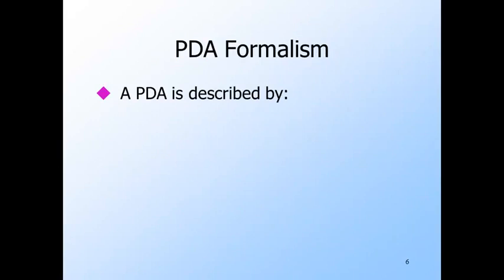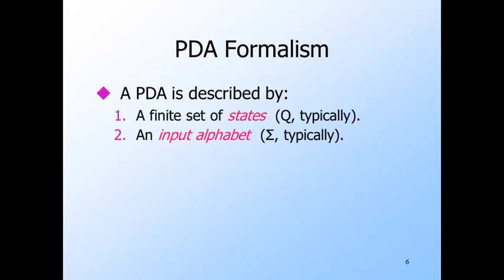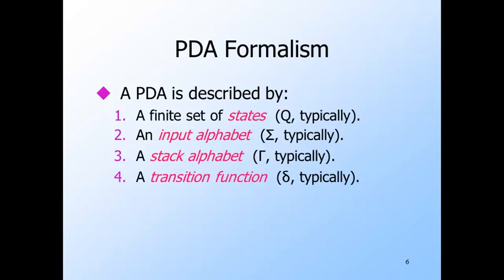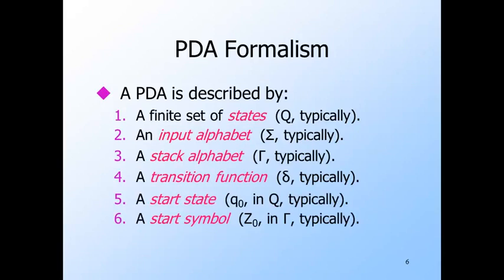Now we'll give the formal notation and usual symbols for the components of the PDA. There is a finite set of states for which we tend to use Q, just as for finite automata. There is a finite input alphabet, for which we'll continue to use sigma. There is a finite stack alphabet — the symbols that can appear on the stack — for which we use gamma. There is a transition function delta. There is a start state, typically q0, as for finite automata. There is a start symbol, a member of the stack alphabet, and initially the stack contains only this symbol. And there is a set F of final states, analogous to finite automata.